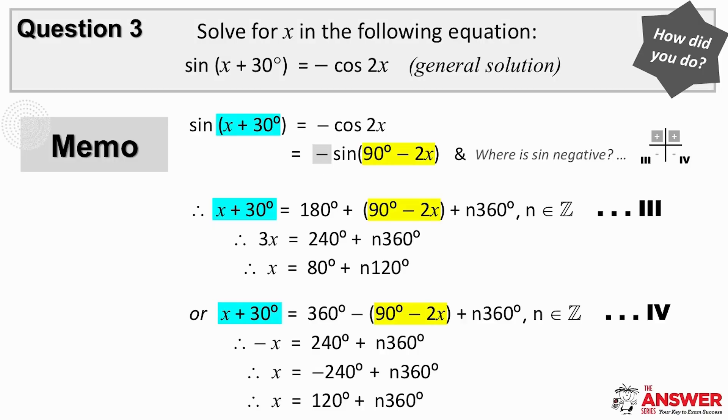Now we have sine of this angle equals negative sine of that angle, and so sine is negative in the third and fourth quad. The reference angle is 90 minus 2x, and we've been asked to find the general solution.